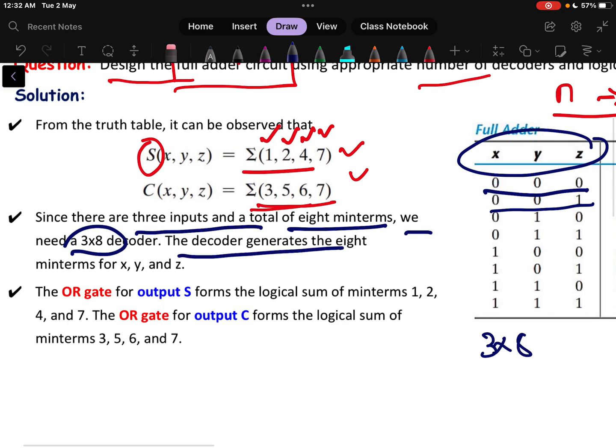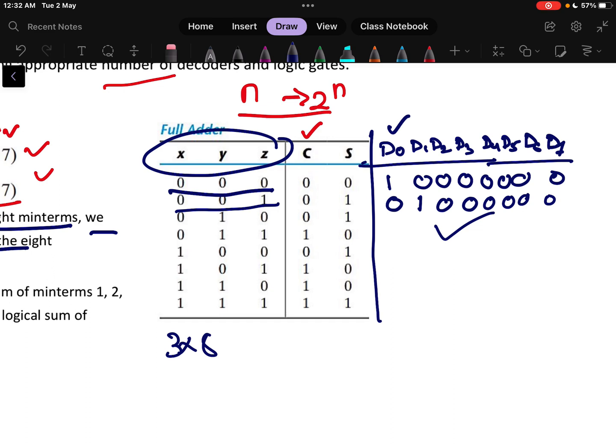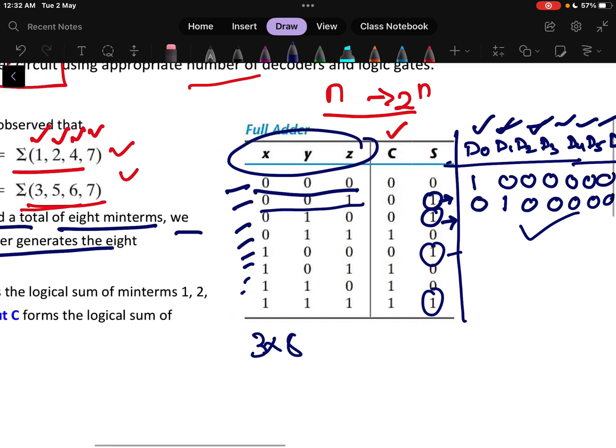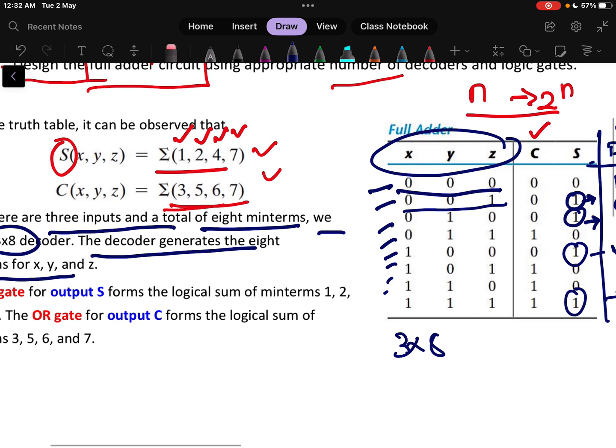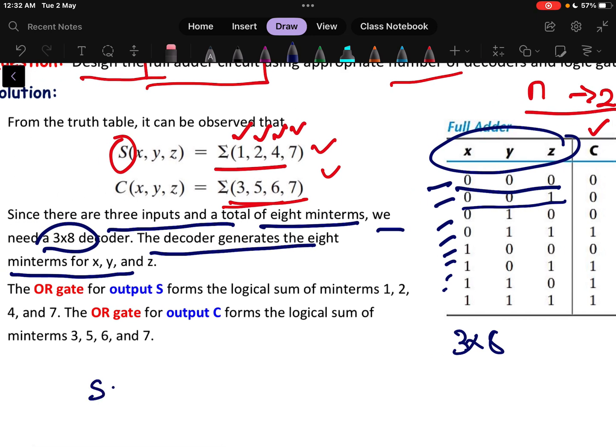The decoder generates the 8 minterms for x, y and z. The decoder will generate all the minterm - decoder will generate d0, it will generate d1, it will generate d2. Corresponding to each and every input there will be output, means some decoder value will be equals to 1. What we need to find? We need to find which are the terms or which are the outputs for that I am getting the sum value equals to 1. See here, this one is d1, this is d2 and this will be your d4, this will be your d7. What I can do here is I can write that sum equals to d1 plus d2 plus d4 and plus d7.